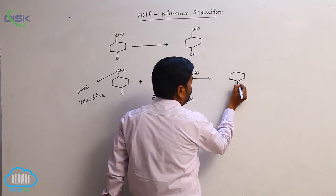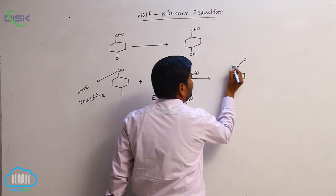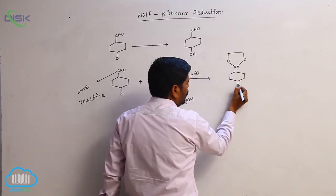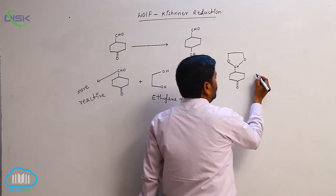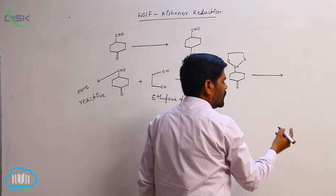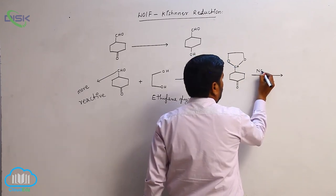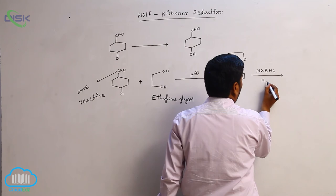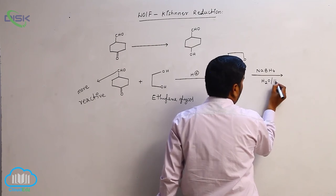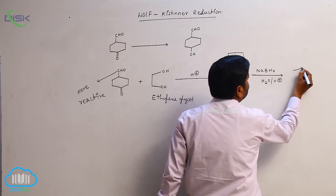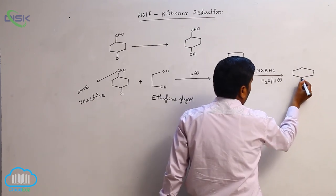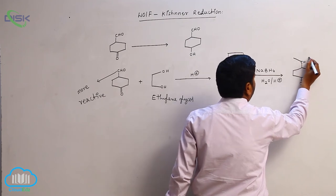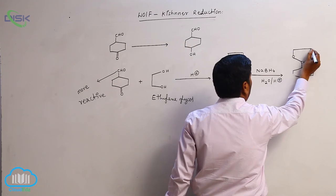The aldehyde is thus protected as a cyclic acetal. Now, if we use sodium borohydride (NaBH4) followed by hydrolysis, only the keto group is reduced to give an OH, while the protected aldehyde acetal group remains intact as –O–CH2–O–.